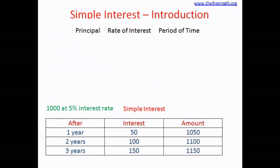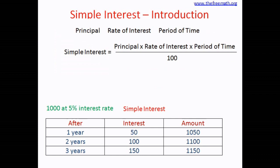Is there a formula to calculate simple interest? Yes. Simple Interest equals Principal multiplied by Rate of Interest multiplied by Period of Time, divided by 100. In short form: I = P × R × T ÷ 100, where P is principal, R is rate of interest, and T is period of time. Let's verify this formula with the last row of our example — three years — where the interest was 150.